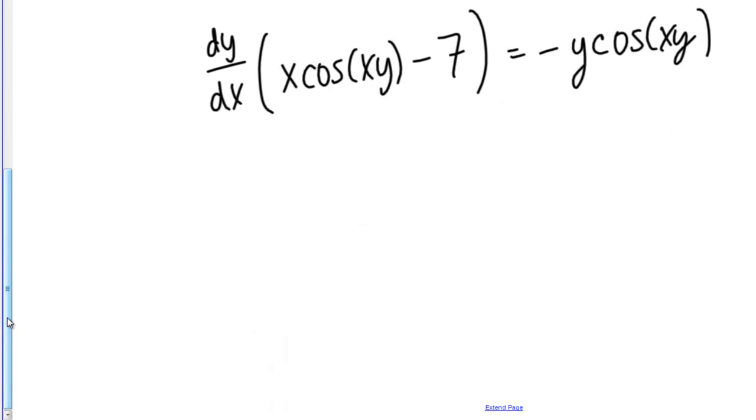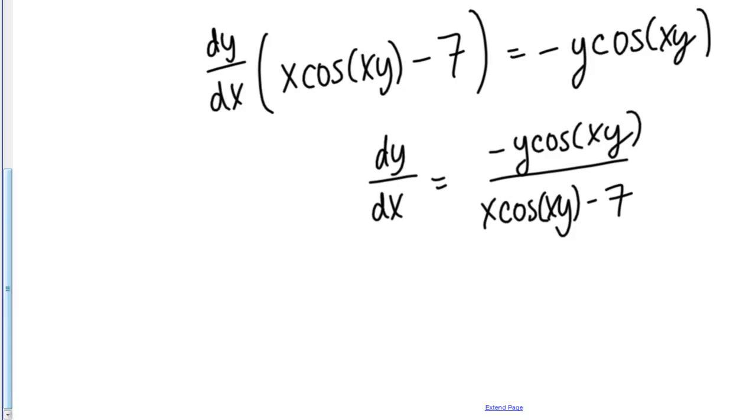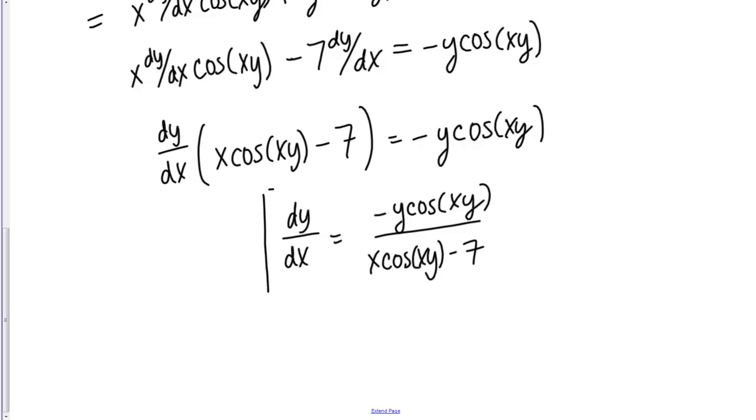From here, there's really only one more simple step. We just need to isolate dy/dx and we do that by dividing both sides by the quantity in parentheses. Here, dy/dx equals negative y cos(xy) on top divided by x cos(xy) minus 7. Now I have my final answer. Here, this is the derivative dy/dx.